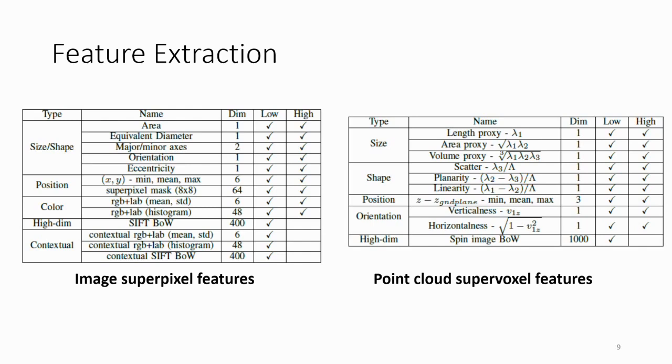On the point cloud side, we can do similar things, but here, of course, we have 3D information, which means that we can look at the 3D size and shape, whether it's linear, planar, or a very scattered region, the position of that region relative to the ground plane, as well as its orientation, and some high-dimensional descriptors, in this case, spin images in 3D.